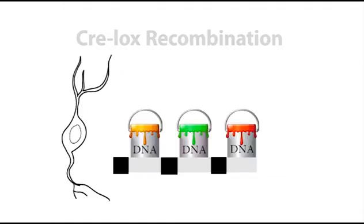We give neurons the genetic equivalent of a paint pot set. Each pot contains the DNA recipe for a different color of fluorescent protein. This paint pot set has cutting sites between each pot of paint, called Lox-P sites.